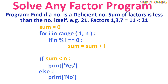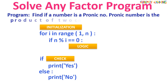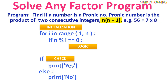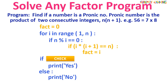Next we will do a program for pronic number. A pronic number is a number which is the product of two consecutive integers, of the form n times (n plus 1). For example, 56 equals 7 multiplied by 8. In initialization we set fact to zero. In the logic section, for each factor i, we check if i multiplied by (i plus 1) equals the original number; if yes, we set fact to i. In the check section, if fact is non-zero it is a pronic number — we can also print fact and fact plus 1.